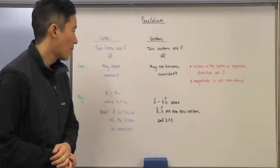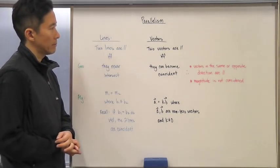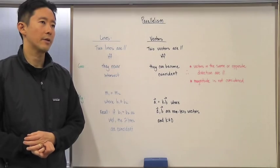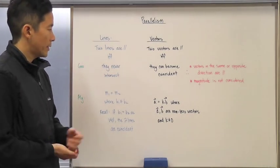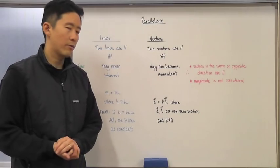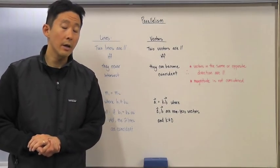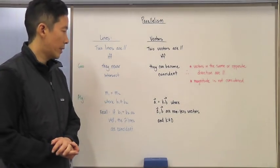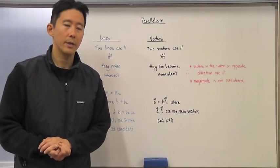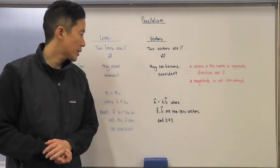So how do we show that two vectors are indeed coincident? The way that we do that is we say that if one is a scalar multiple of the other, then we know they are coincident because they will be going in the same or opposite direction.